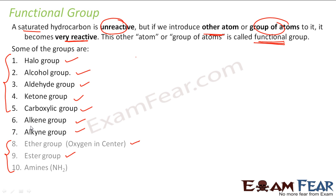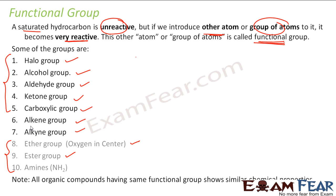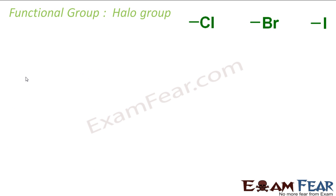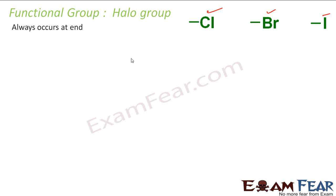Please note that all groups within the same functional group class have the same chemical property. So first we will take the halo group. Any halogen — for example chlorine, bromine, iodine — they are halo groups. They are functional halo groups. They are shown with a dash, meaning they are ready to be bonded with some carbon atom. So they are all halo groups: fluorine, bromine, and iodine. And they always occur at the end.